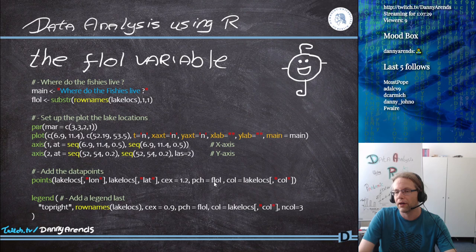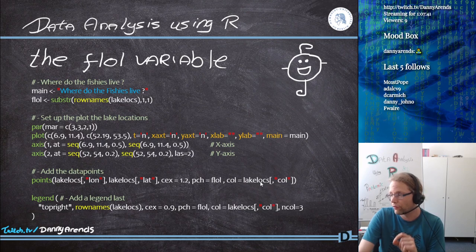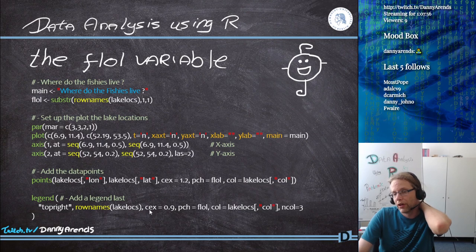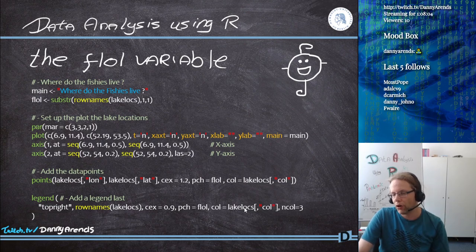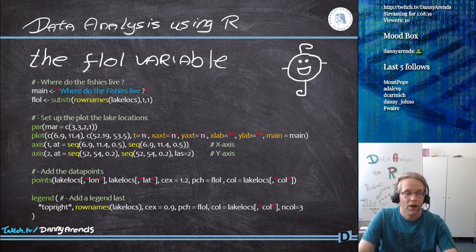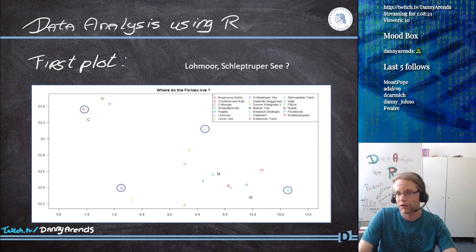I add a legend at the top right with the row names of lake_locs, slightly smaller text, using FLOL as the plotting symbol, colors from the color column, and three columns in the legend so it's not one big list. When we do this, we get a plot and I can show you in R that it really works. The yellow S is Salsdorf, the green N is Neumannskühle.